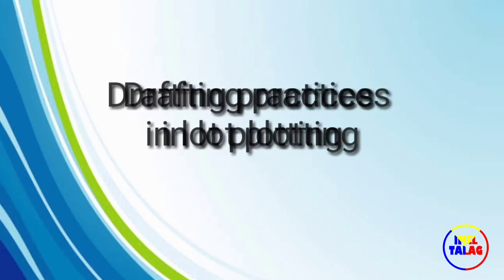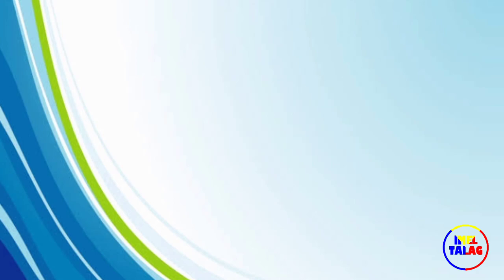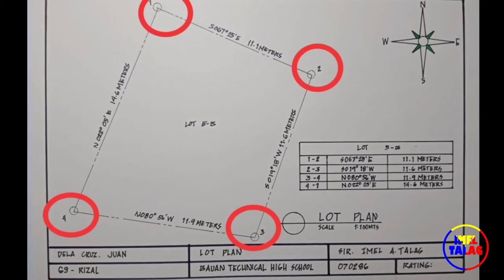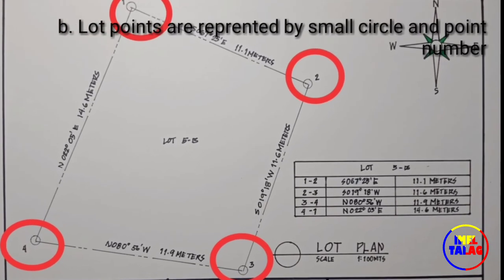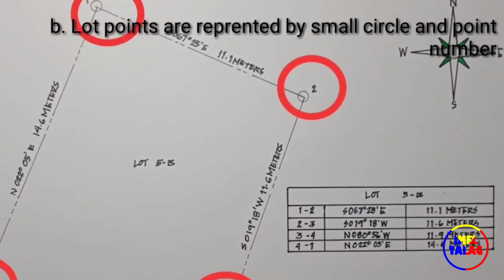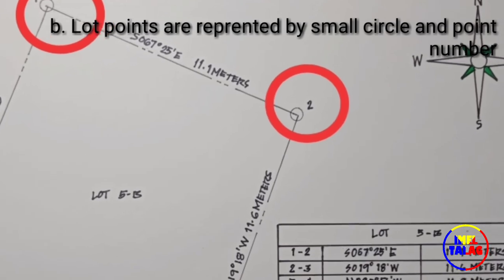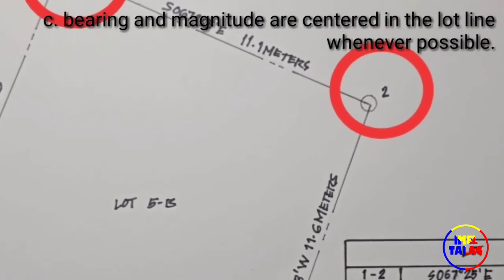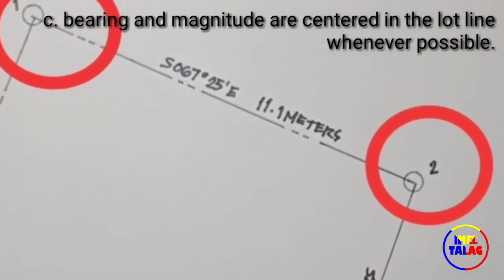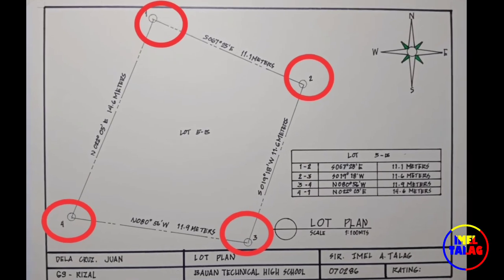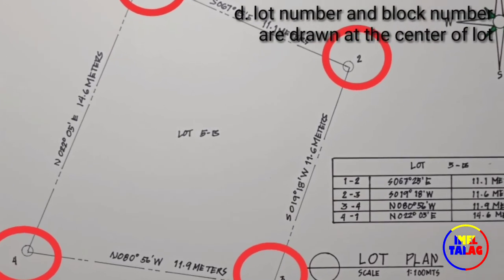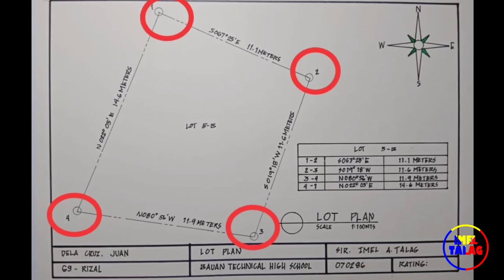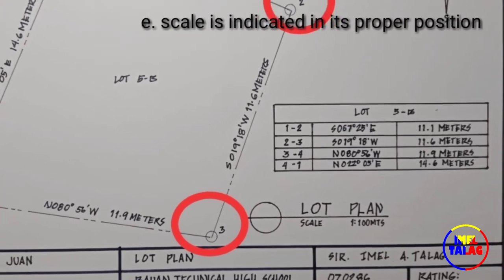Drafting practices in lot plotting: A) All drawings and labels are inked. B) Lot points are represented by small circles and point numbers indicated near it within the lot whenever possible. C) Bearing and magnitude are centered to lot line and within the lot whenever possible. D) Lot number and block number are written at the center of lot. E) Scale is indicated in its proper position.